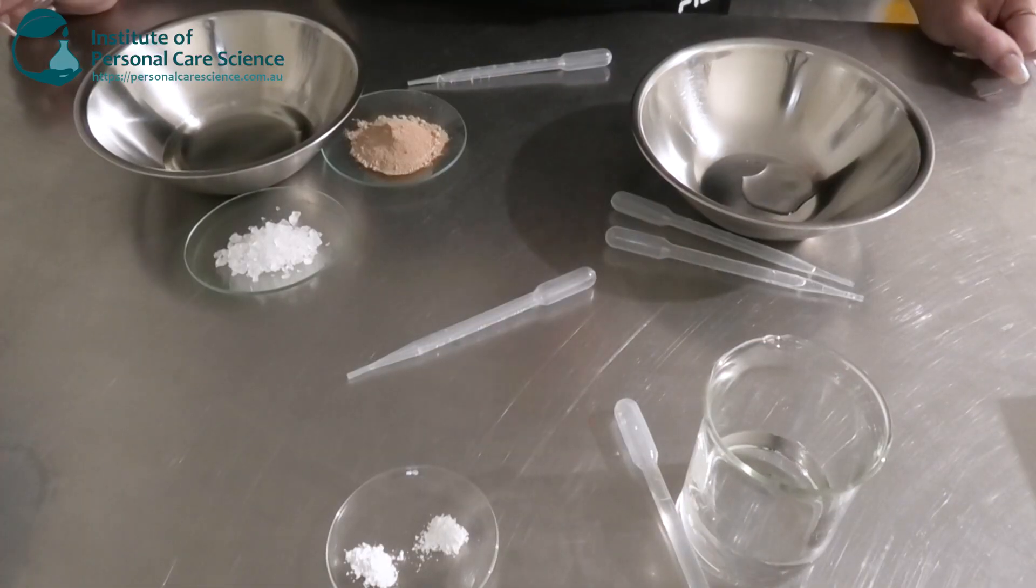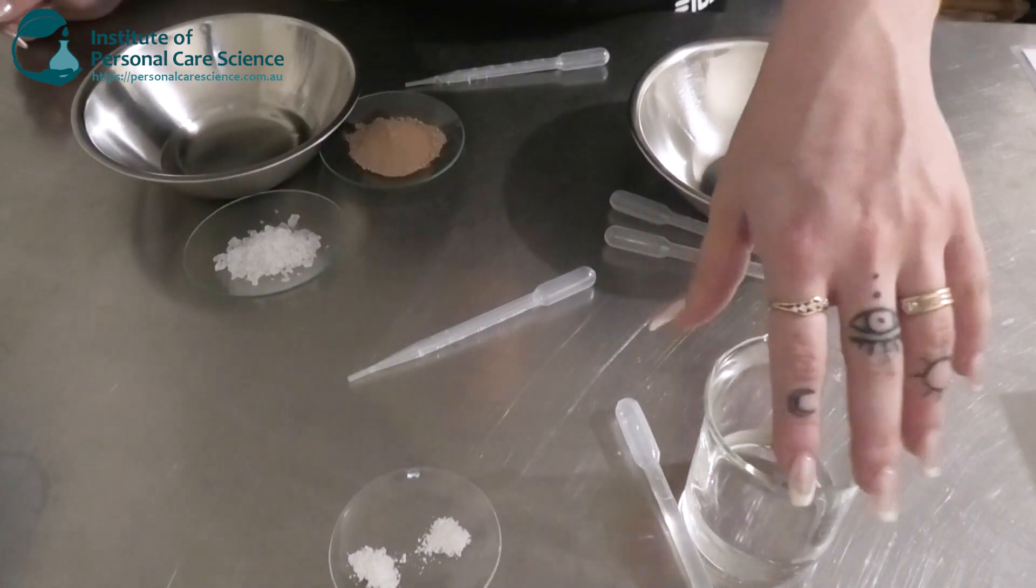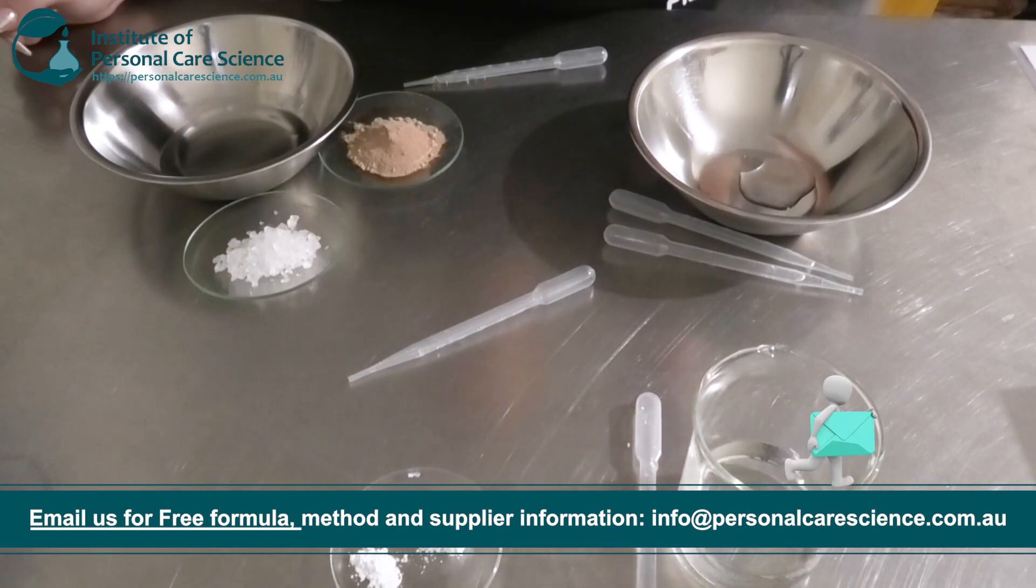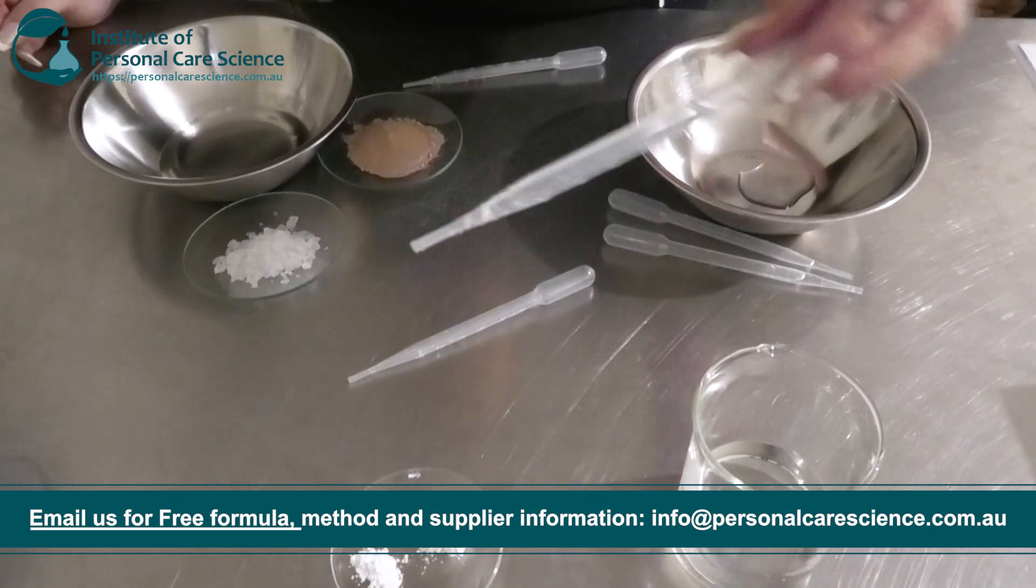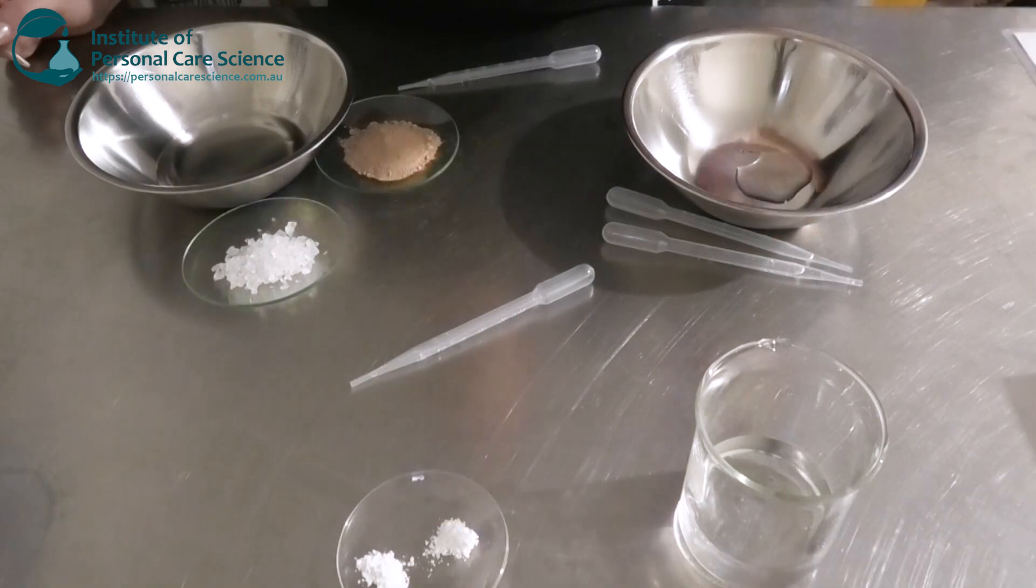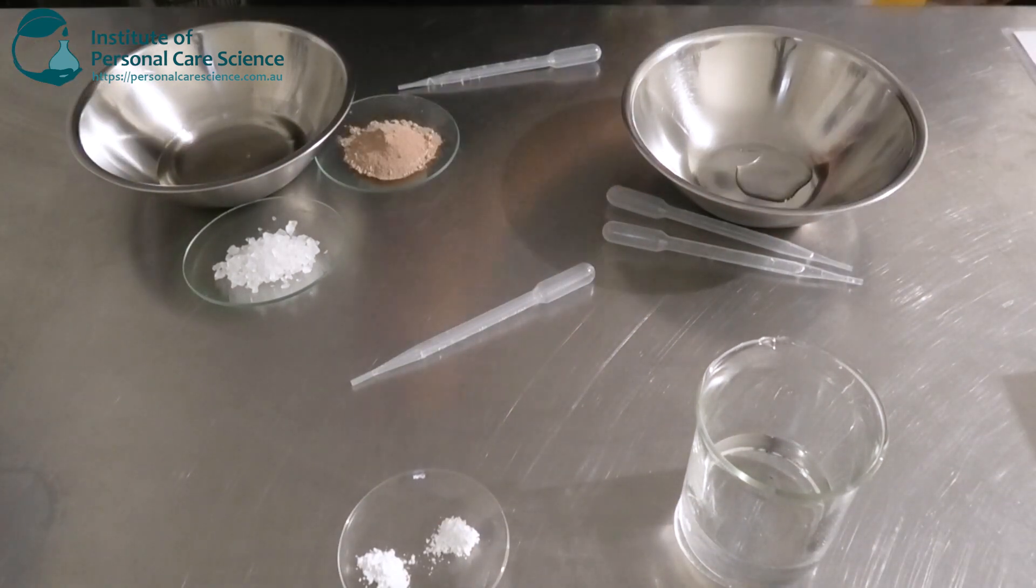Okay, so getting started with our encapsulated foundation, I'm going to be building a gel type network here. So I have my water phase here in a beaker because I'm going to be using my overhead stirrer, and to this I'm going to be adding some propanediol. This is going to add some moisture to the skin and also protect it from transepidermal water loss, which is good for our foundation because you do want it to sit quite nicely on the skin.